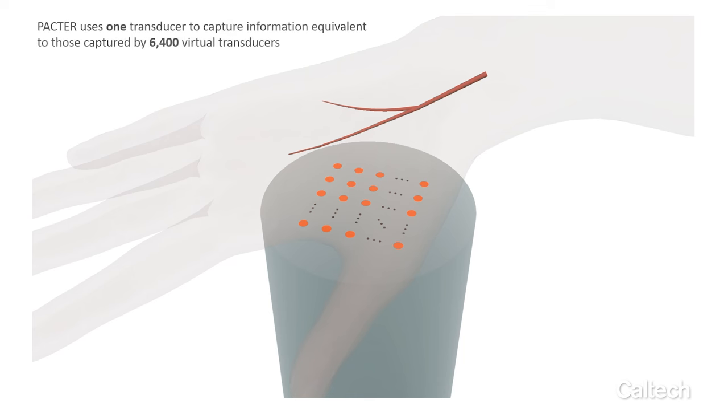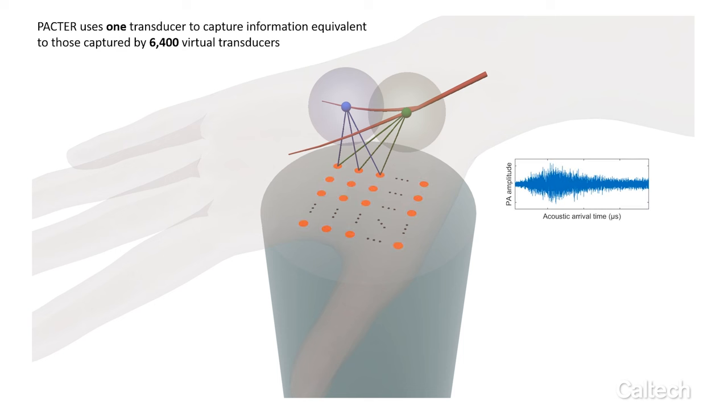PACTER uses one ultrasonic transducer to capture information, such as the photoacoustic signal from a blood vessel, but functions equivalently as 6,400 virtual transducers.